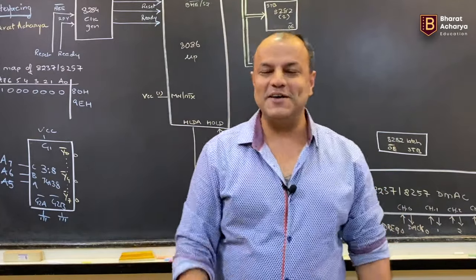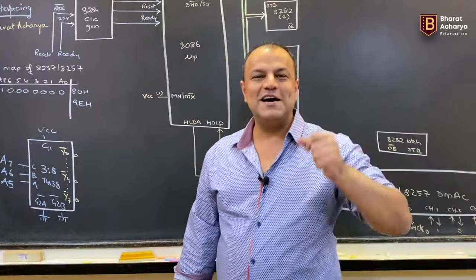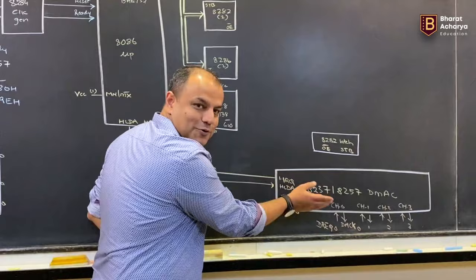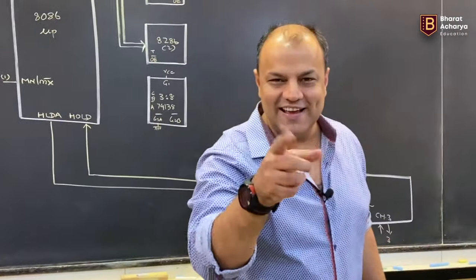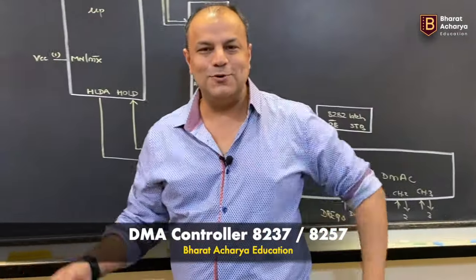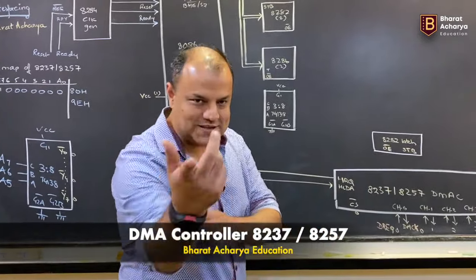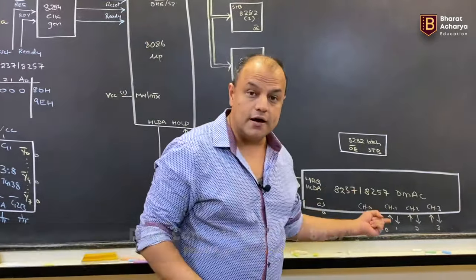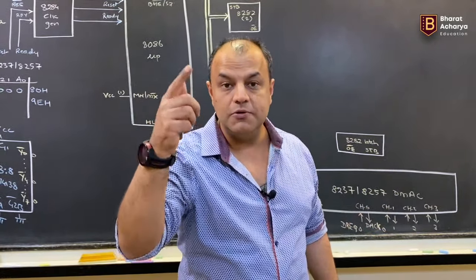What's the second reason why DMA is fast? It's a hardware-based transfer. You're using a dedicated chip for doing the transfer called the DMA controller. The chip number is 8237, or 8257 — both are DMA controllers, both are practically the same, and the interface is also practically the same with one signal that changes. So we are using dedicated hardware to do the transfer as opposed to the microprocessor transferring between memory and IO.